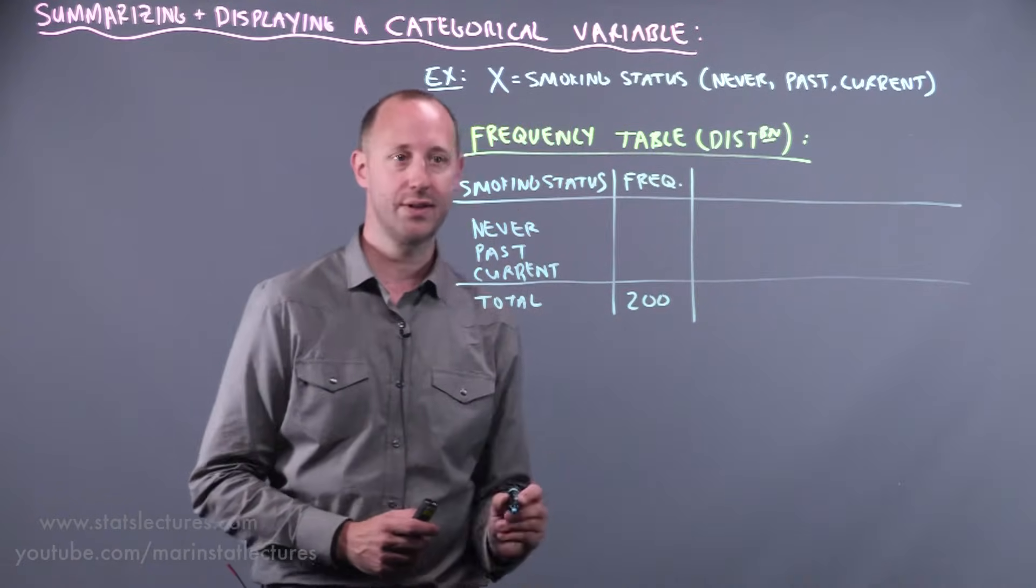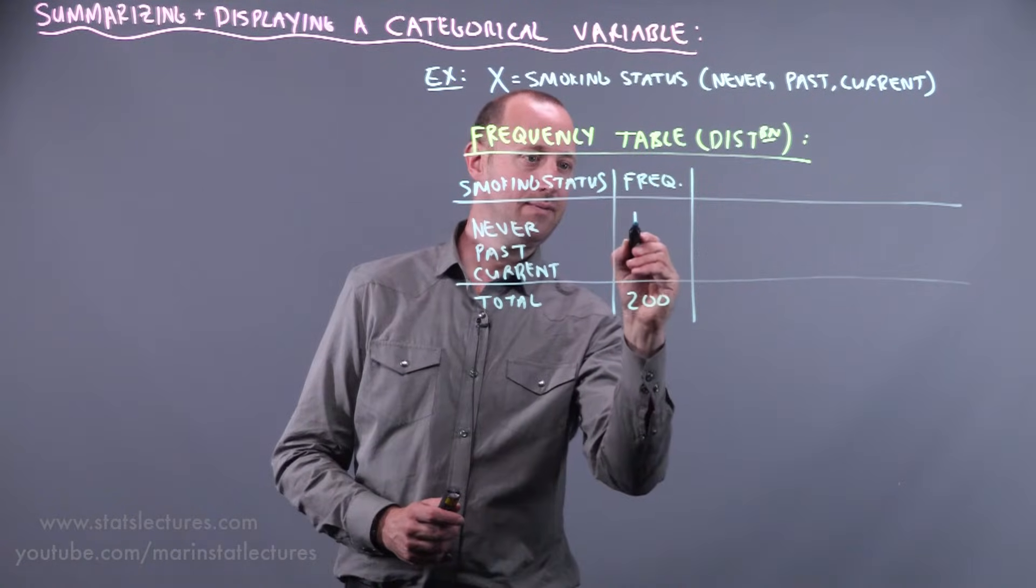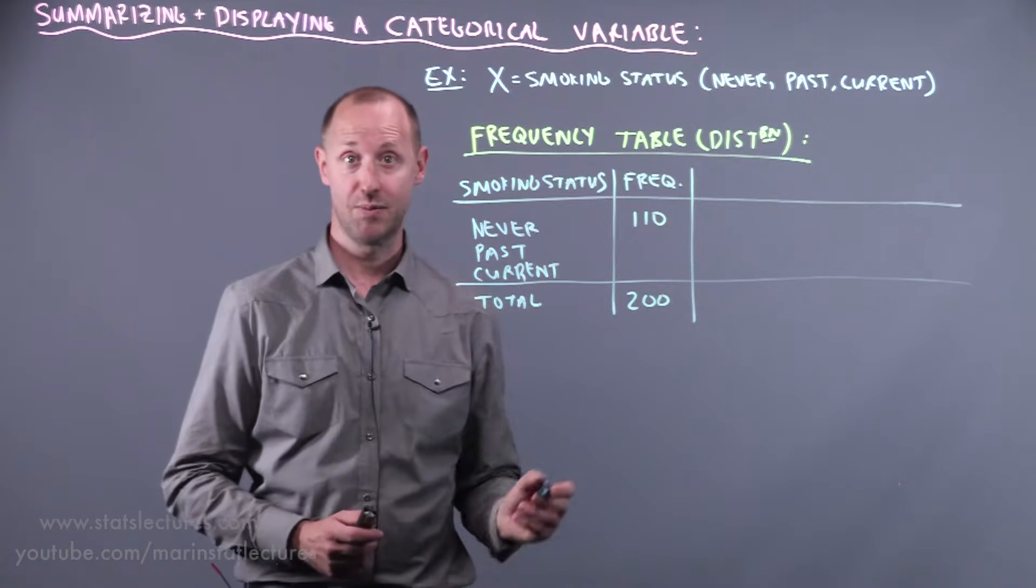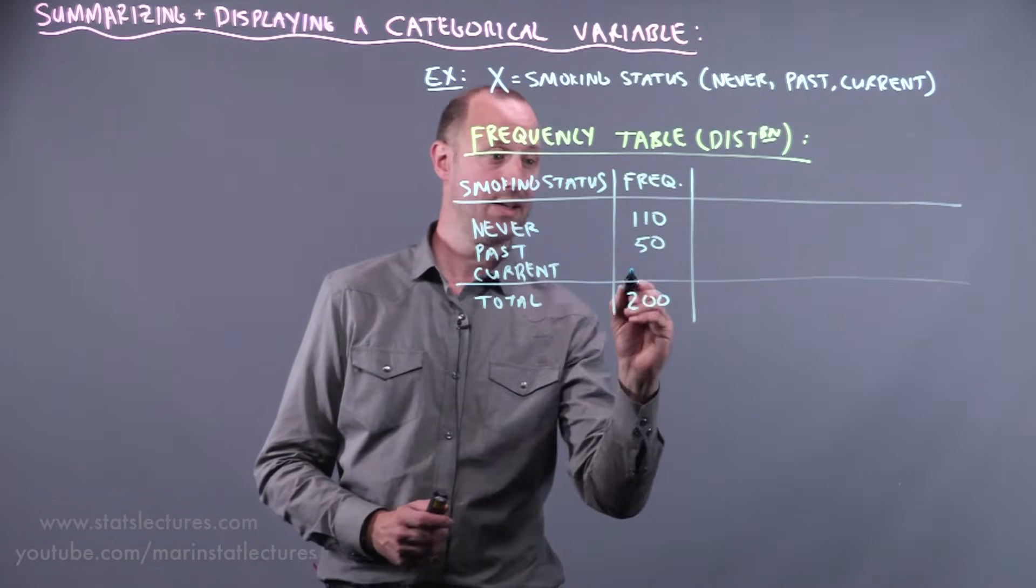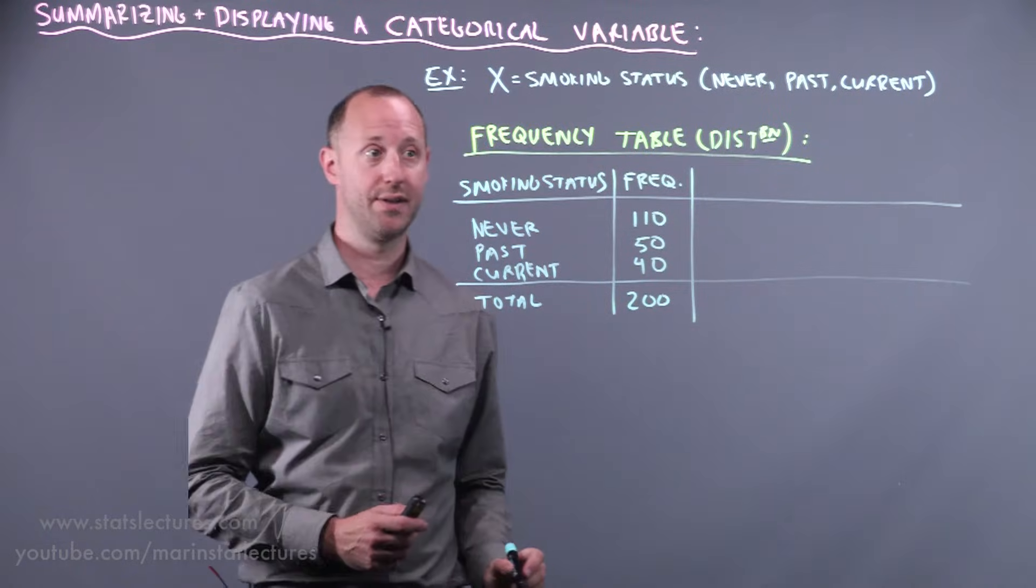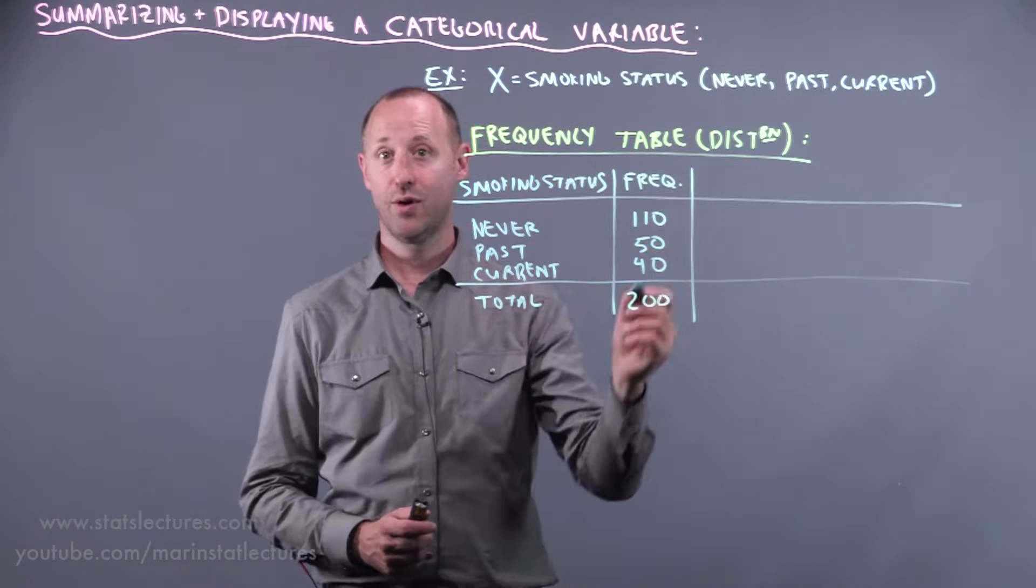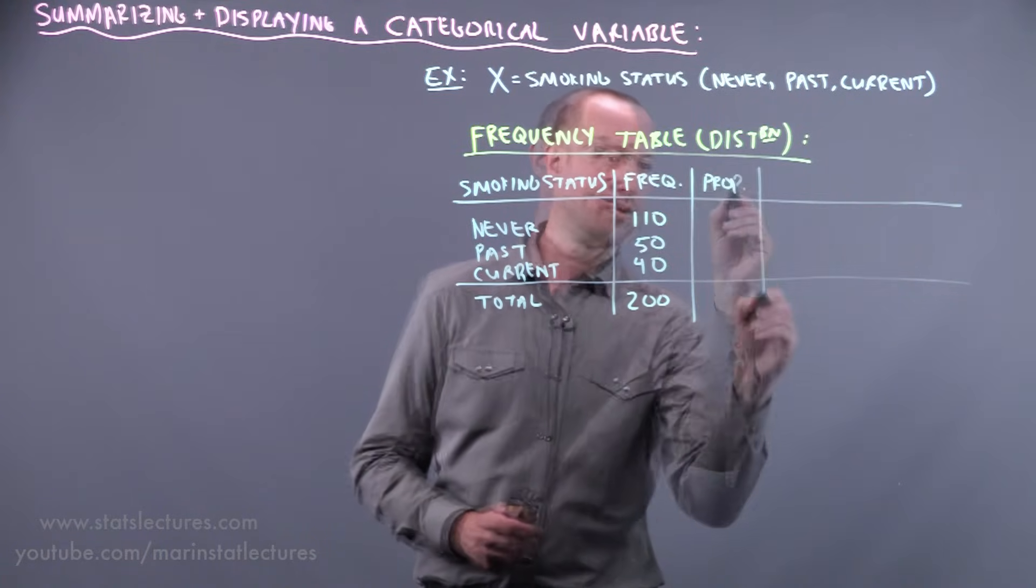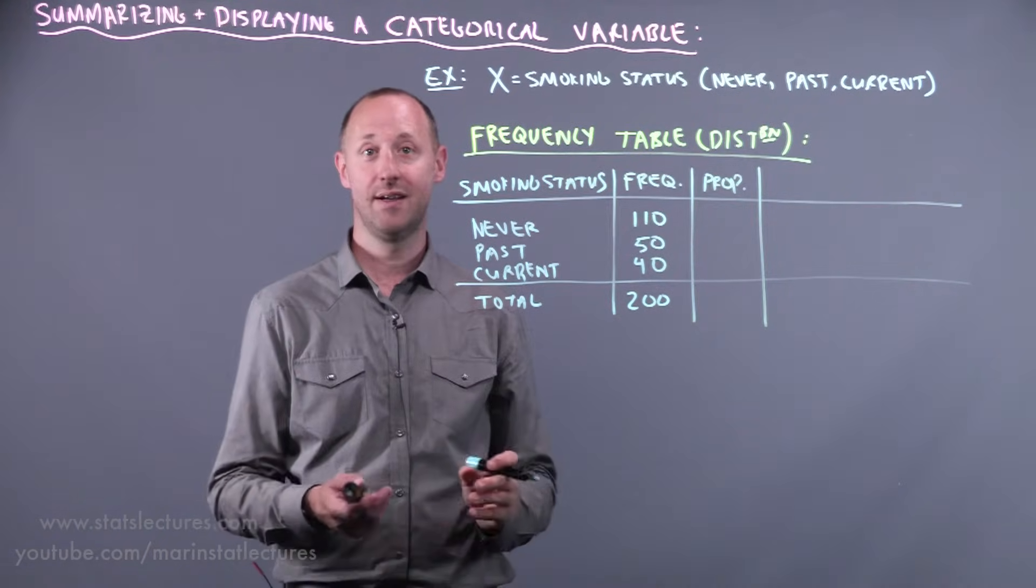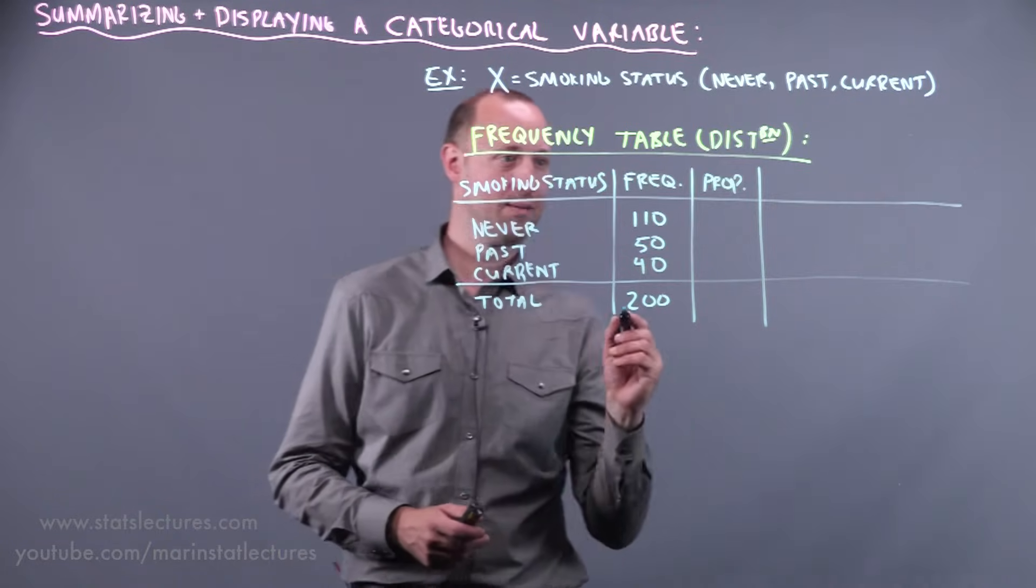We've got a sample size of 200, and let's suppose that 110 responded as never smokers, 50 as past, and 40 as current. Then, rather than recording the frequencies, we can convert this into a proportion, or it also gets reported as a relative frequency sometimes.